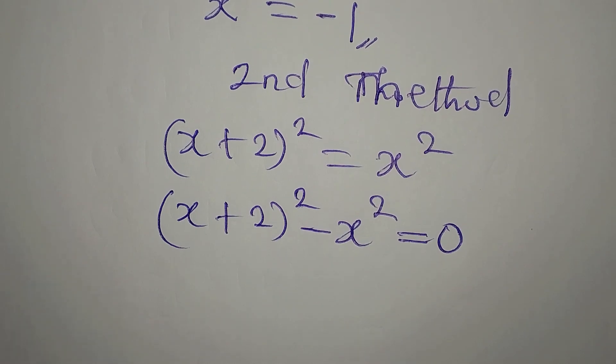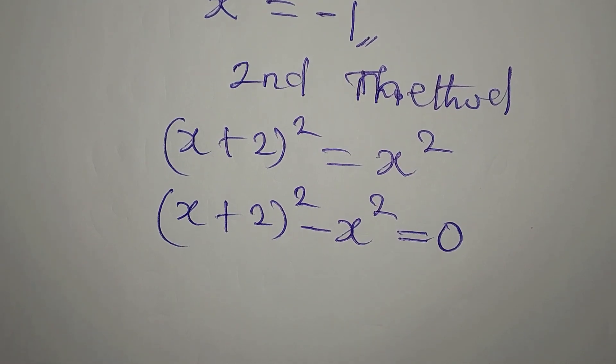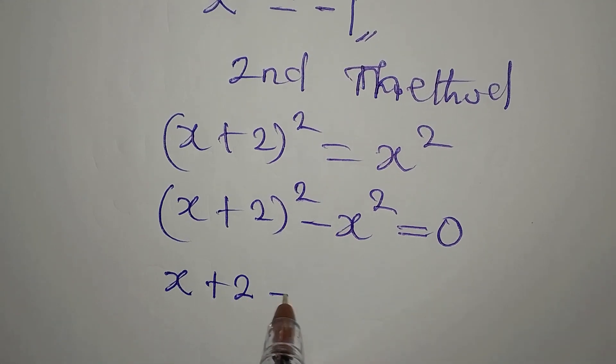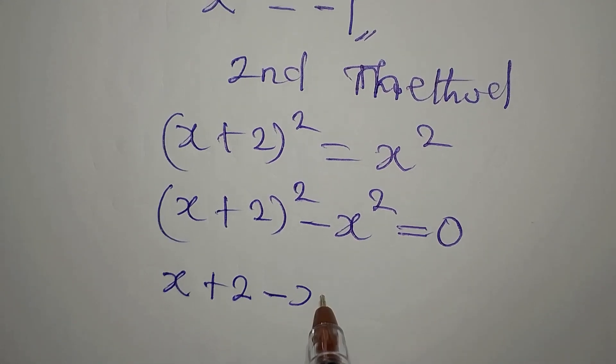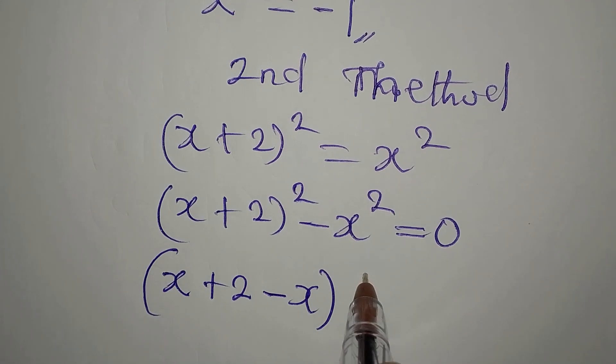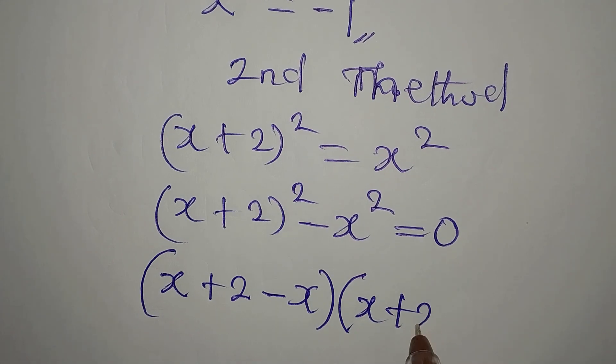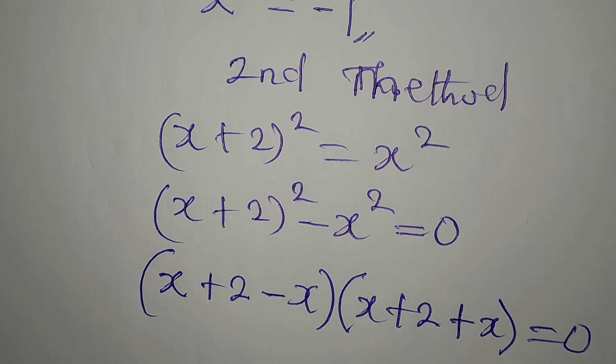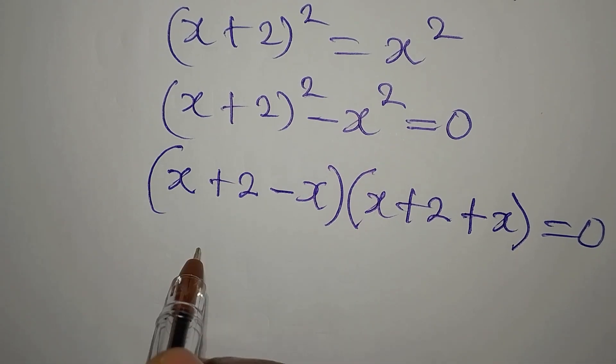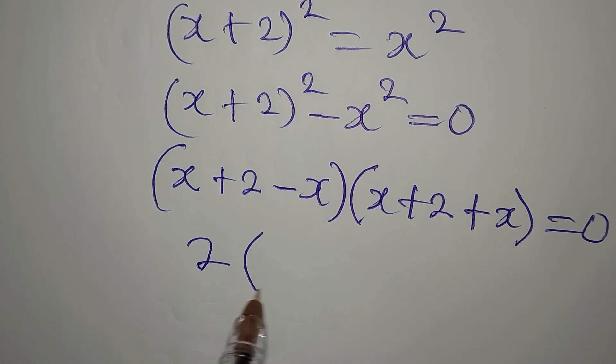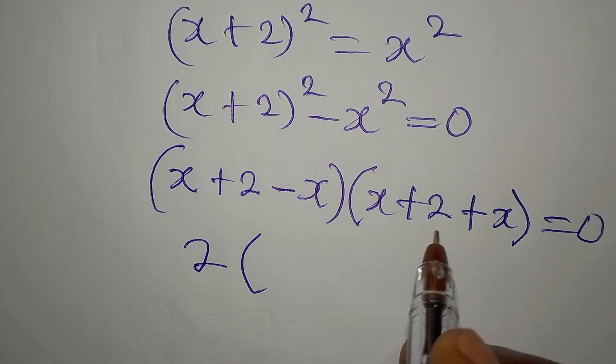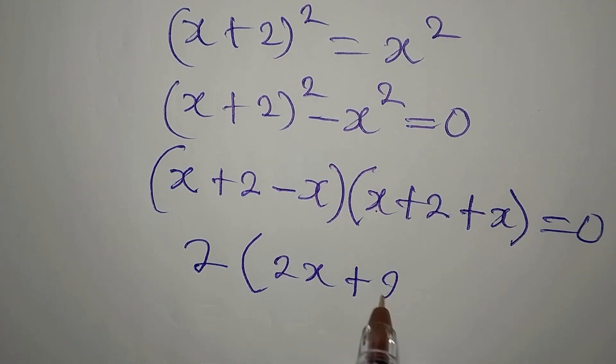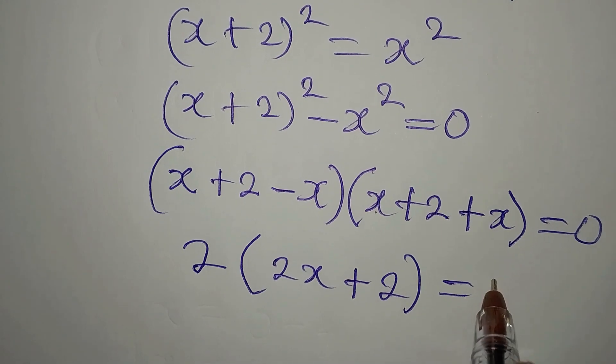In this method, we will be using complete difference of 2 squared. We have x plus 2, then we have minus x. This will be in the first bracket and then in the second, we have x plus 2 plus x. This is equal to 0. x minus x will give 2. Then, in this bracket, we have x plus x. That will be 2x, then plus 2. This is equal to 0.